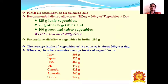ICMR has recommended a balanced dietary allowance for Indians of 300g of vegetables per day, consisting of 125g of leafy vegetables, 75g of other vegetables, and 100g of root and tuber vegetables. The WHO has advocated 400g per day. The per capita availability of vegetables in India is about 250g, while the average intake is about 200g per day.